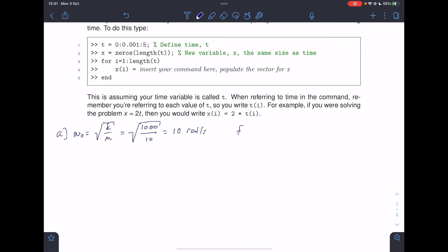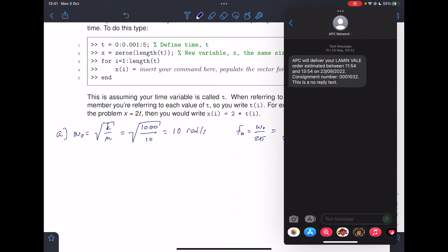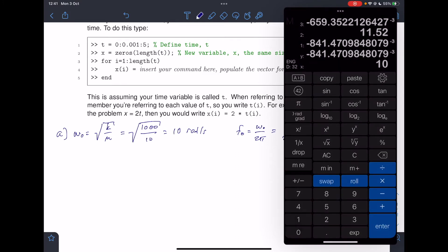So in hertz, f naught is going to be omega naught divided by 2 pi. 10 divided by 2 pi, and if I do the sums for that, we get 1.59.